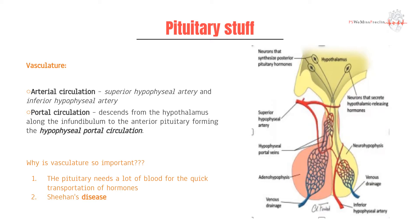Why is this vasculature so important? First, it needs a lot of blood because all of these hormones are transported through the blood, so we need a system that's very efficacious in getting those hormones to where they need to be. Secondly, this vascularity is relevant to Sheehan's disease, or Sheehan's syndrome, which we'll discuss shortly.